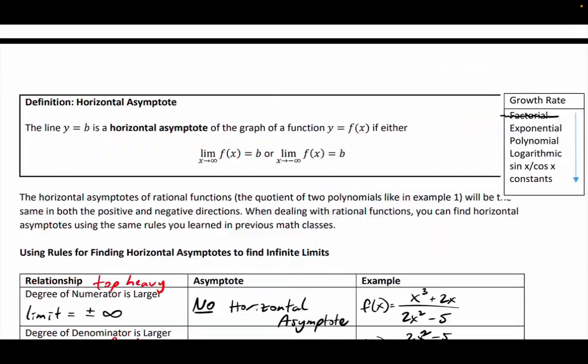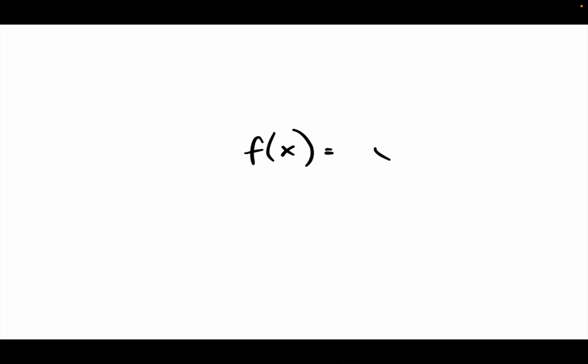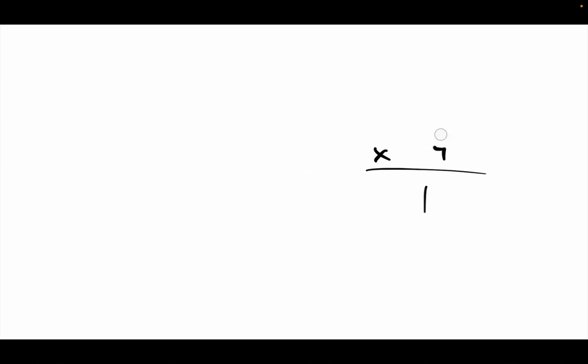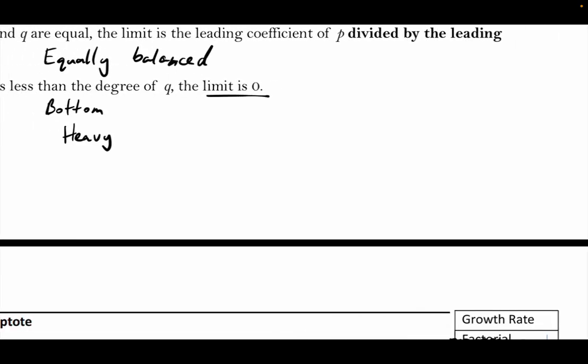Let me give you this example — you don't have to write this down. Let's say we have x to the third plus four. Which category does that fall into — bottom-heavy, top-heavy, or equally distributed? Top-heavy. Why? Because it's going to be over one. There is no fraction written, but it's always over one. Everything can be written as a fraction.